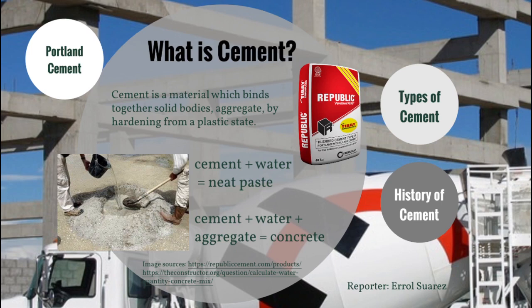Concrete, another common term, is what we should instead call cement that has already been mixed with water and aggregate such as sand. A pure mixture of cement and water is usually called neat paste. Using neat paste is not often favored not only due to its cost, but also due to it producing more heat and being more sensitive to volume changes once it has already hardened.